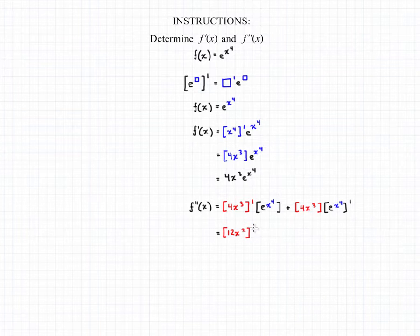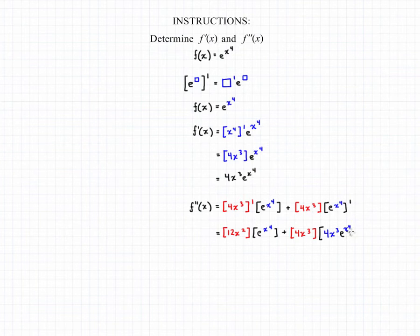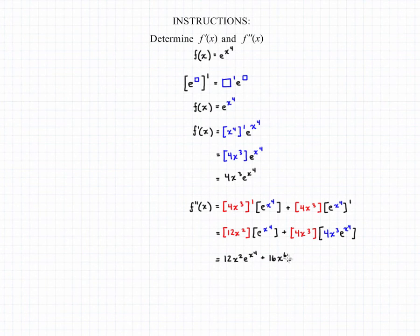When we're done with the derivatives, we get 12x squared times e raised to x to the fourth, and then we add that to 4x cubed multiplied by 4x cubed e raised to x to the fourth. When all of our multiplication is done and cleaned up, our final answer for the second derivative is 12x squared e to the x to the fourth plus 16x to the sixth times e to the x to the fourth.